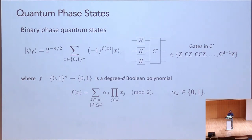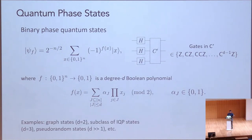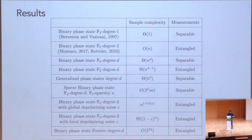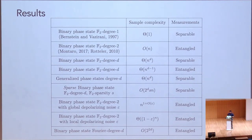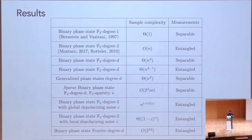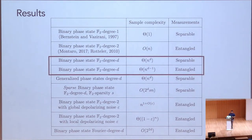The degree-d Boolean polynomial has monomials indexed by subsets J of n qubits with F2 coefficients alpha_J. For d=2 we get graph states, d=3 gives a subclass of IQP states, and very high degrees yield pseudorandom states. For degree one, Bernstein-Vazirani shows learning in O(1) shots. For degree two, Montanaro and Rottler showed efficient learning. We show that for degree d > 2, learning requires O(n^d) samples with separable measurements and O(n^{d−1}) with entangled measurements. There are also results for generalized quantum phase states produced by diagonal unitaries of the Clifford hierarchy.